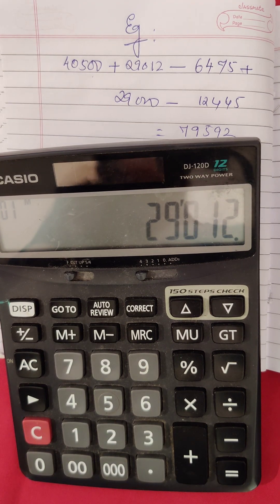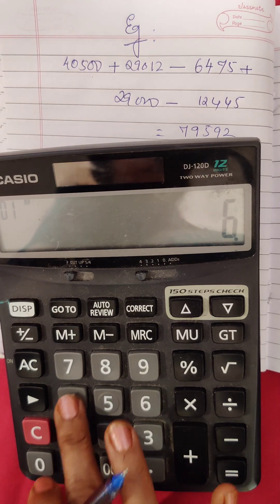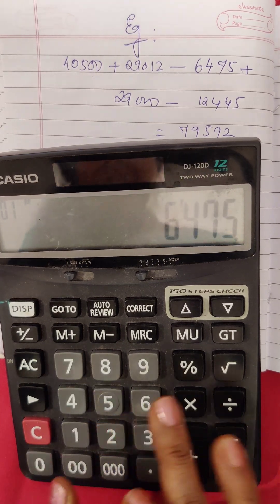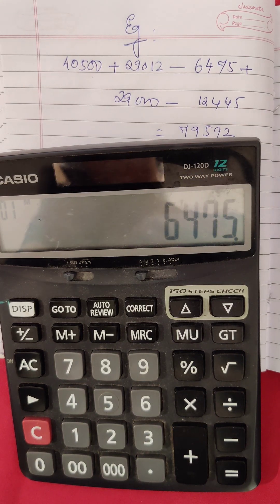Then 6,475 you have to subtract. So you will put 6,475 in the memory minus button.